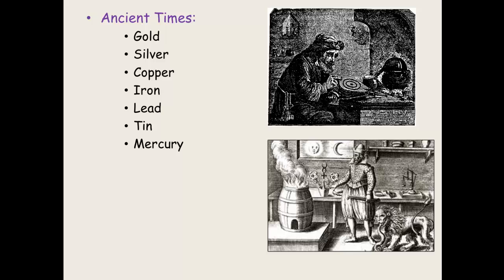Gold, silver, copper, iron, lead, tin, mercury, sulphur, carbon. These are the elements that the alchemists used to muck around with trying to make gold out of lead and things like that.